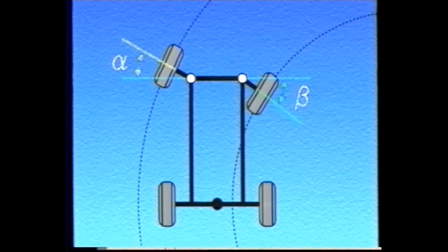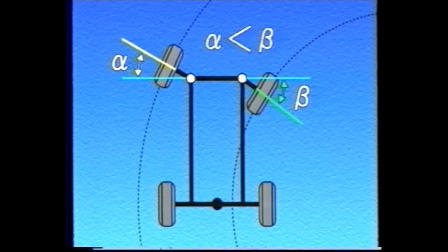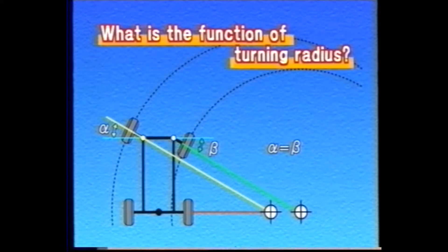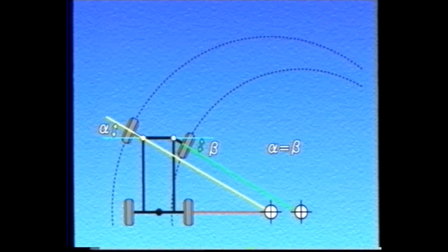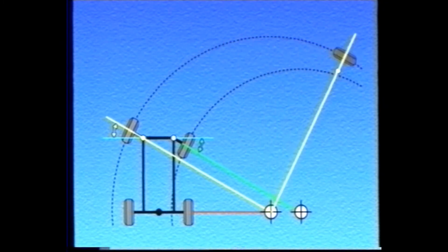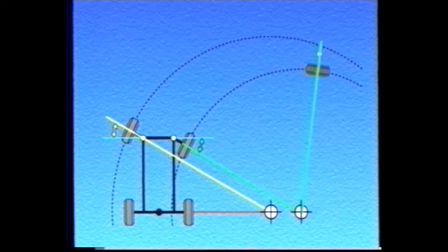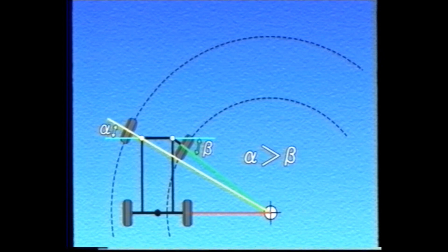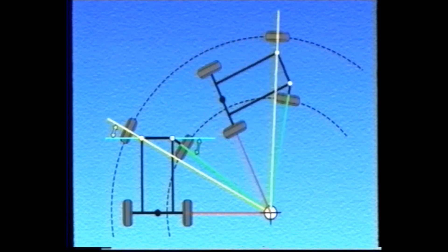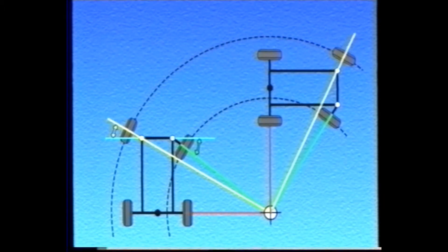Turning radius refers to the turning angle of the left and right front wheels during cornering. By making the turning angles of the left and right wheels different, the four wheels of the vehicle turn around the same center. If the angles were the same, each wheel would turn around a different center, causing side slipping of the tires and making smooth turning impossible. The wheel inside the turn is given a larger turning angle so that the center of the turn is the same for each wheel, aligned with the rear axle center line.